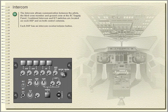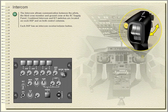Intercom. The intercom allows communication between the pilots, the third crew member, and ground crew at the AC supply panel. Combined intercom and RT switches are located on each audio selector panel and on both control columns. Each audio selector panel has an intercom receive volume button.